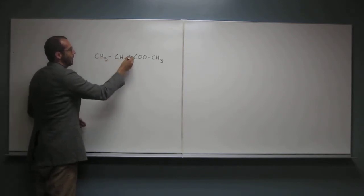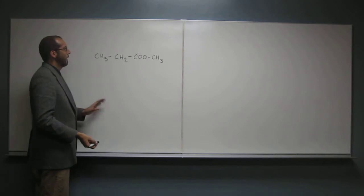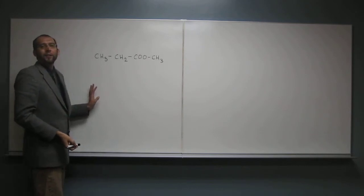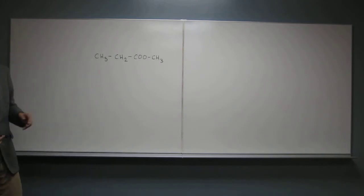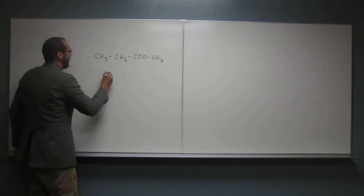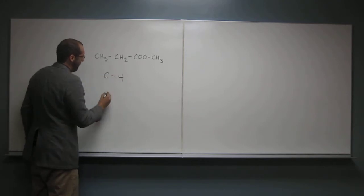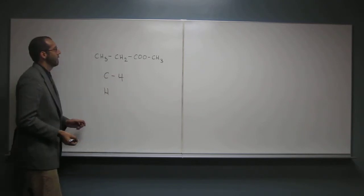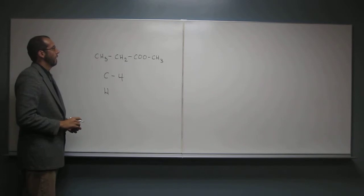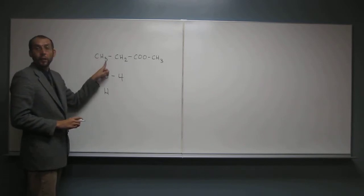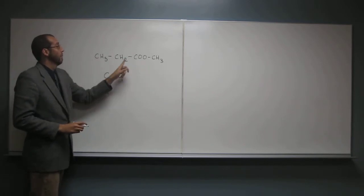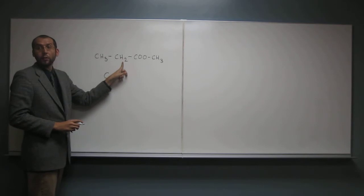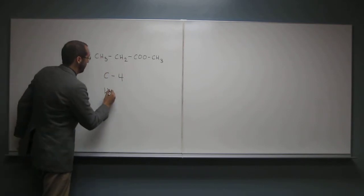One, two, three, four. Okay, so let's count — since that was so easy, let's count the hydrogen atoms. So let's say carbon, there's four of them. Hydrogen — how many of those are there? Eight. Eight, right, because there's three, plus three, plus two, right? So that's eight total.